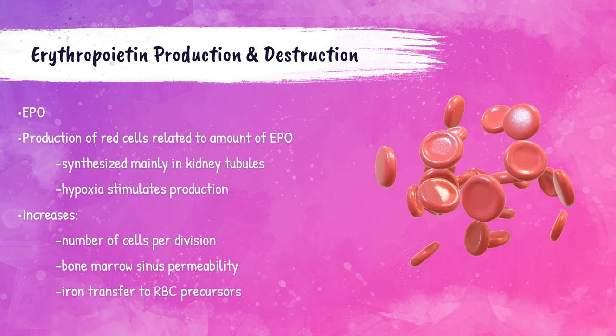Every second, the human body produces 2 million red blood cells within the bone marrow — 2 million every single second. This is a complex process that starts in the bone marrow with a multi-potential hematopoietic stem cell and then ends in a mature erythrocyte.